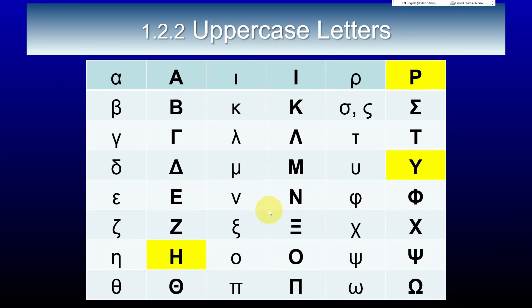Most of the uppercase letters are as you might expect. For example, an A sound is represented by a character that looks very much like an English capital A, a B sound by an equivalent letter, an epsilon by a letter. And the other ones — kappa, mu, nu, omicron, tau — are all reasonably straightforward.